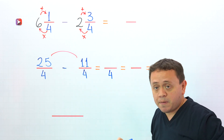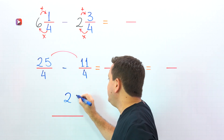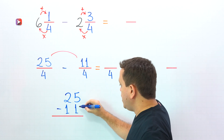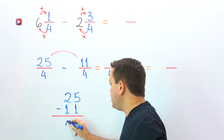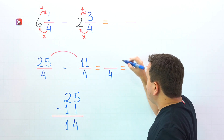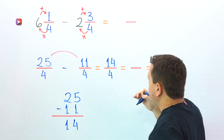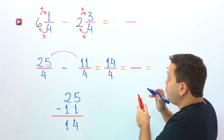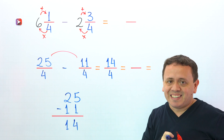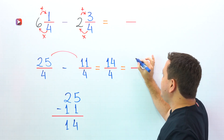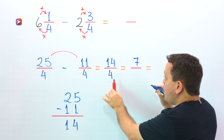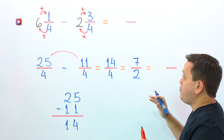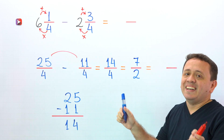We have 25 minus 11 over 4. 25 minus 11: 5 minus 1 gives us 4, and 2 minus 1 is 1, so the answer is 14. We get 14 fourths. Hold on — 14 fourths is a fraction we can simplify. We divide the numerator and denominator by 2: 14 divided by 2 gives us 7, and 4 divided by 2 gives us 2. We have 7 halves, which is in its simplest form.